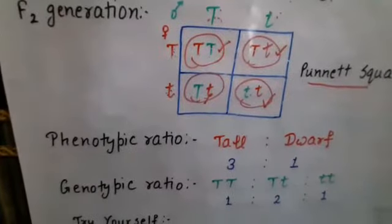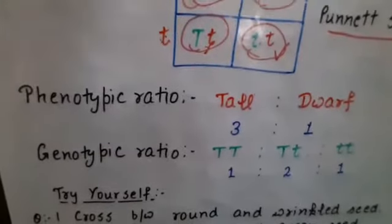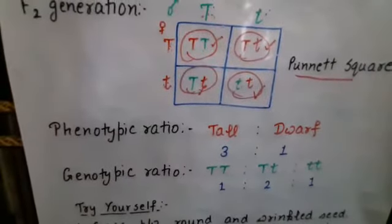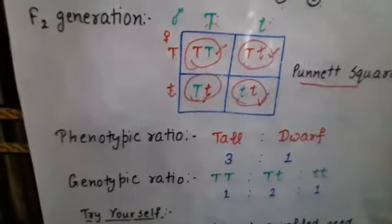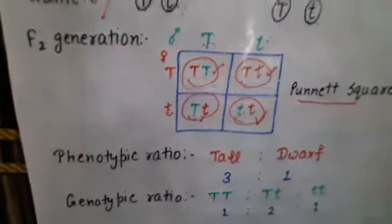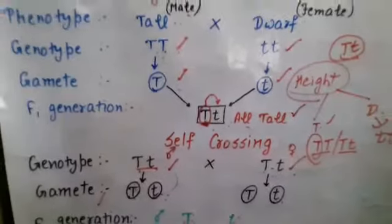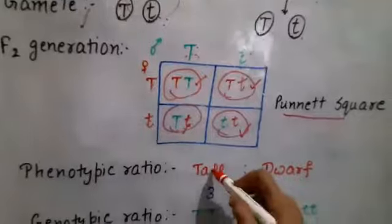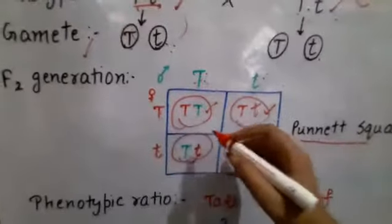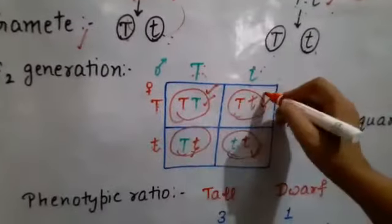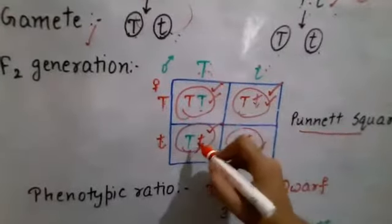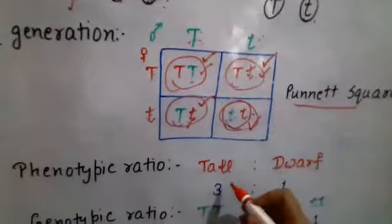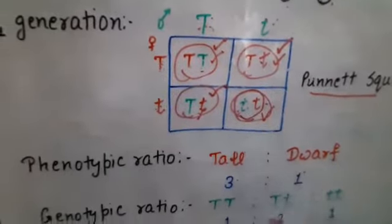We have to calculate the ratio — phenotypic ratio as well as genotypic ratio. Phenotypic ratio is the ratio of phenotypes, which is what we can see morphologically. In this cross, we have two phenotypes: tall and dwarf. Here three are tall and one is small t, small t, which is dwarf. So the phenotypic ratio is 3:1.